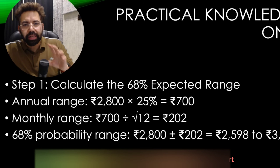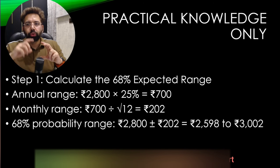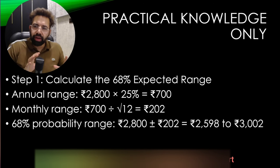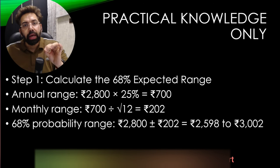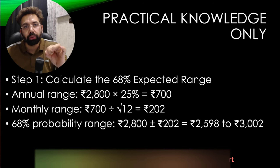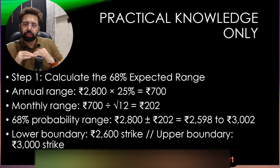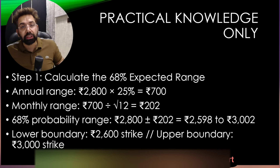So 202 is the one standard deviation monthly range. That is a 68% probability range. 2800 plus or minus 202 means Reliance is expected to move anywhere between 2598 and 3002. Remember, there is zero guesswork — you are doing exactly what the market is telling you. Based on this, we set a lower boundary at the 2600 strike and an upper boundary at the 3000 strike, 68% of the time.